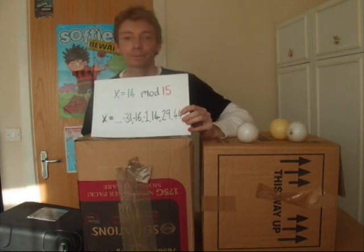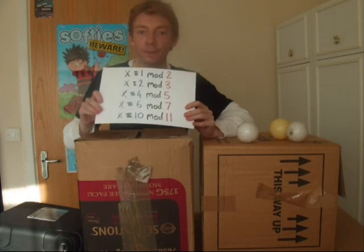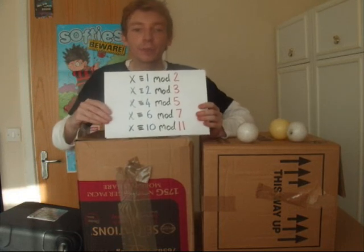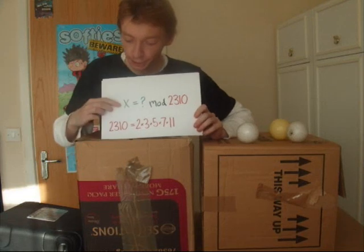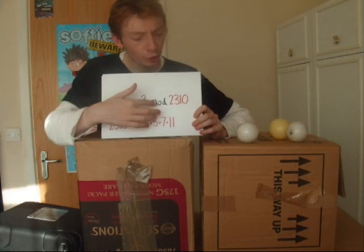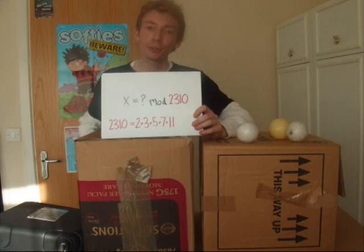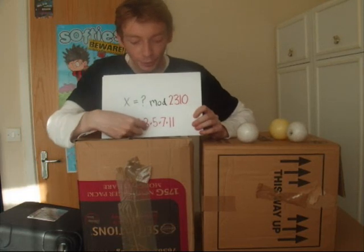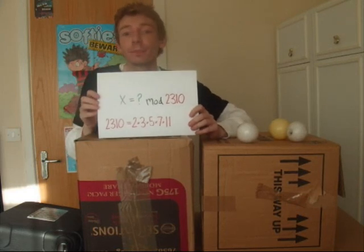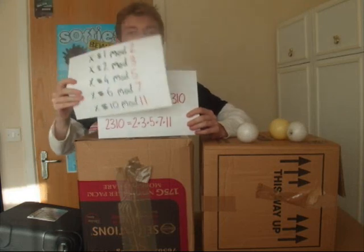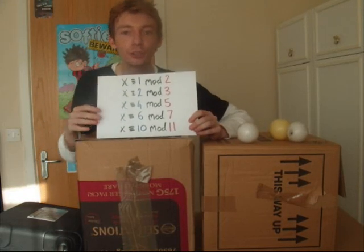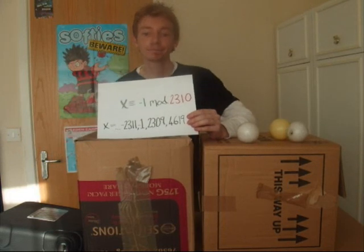If I add in the other equations like this — there we go, we've got five of them — the Chinese remainder theorem tells me that x, the size of my collection, is going to be something mod two thousand three hundred and ten. That two thousand three hundred and ten comes from two times three times five times seven times eleven. To work out this question mark is a lot harder now, but we can do it by simply spotting a common solution. And if you notice, minus one is a common solution to these equations. So, I can say that x ≡ −1 (mod 2310).